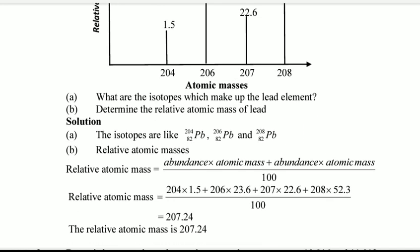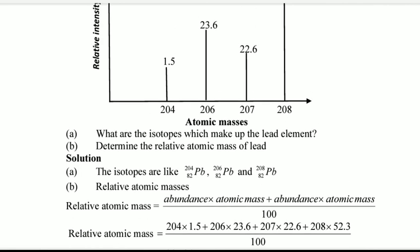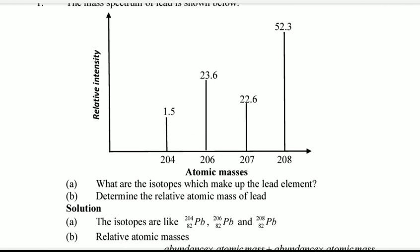What determines the relative atomic mass? Our formula remains the same. We are just taking the abundance times its atomic mass, then you plus another abundance and its atomic mass, then you divide by the total percentage.